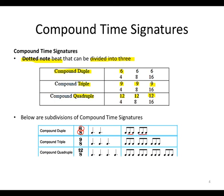Which means compound triple time. We have nine beats — quaver beats. So which will equal how many beats? Three beats — three dotted beats — which gives three groups of three quavers each.